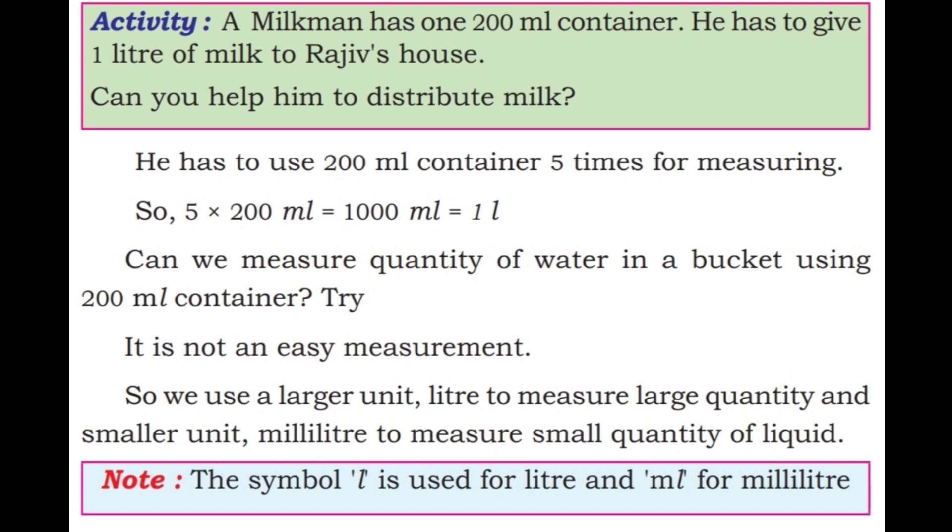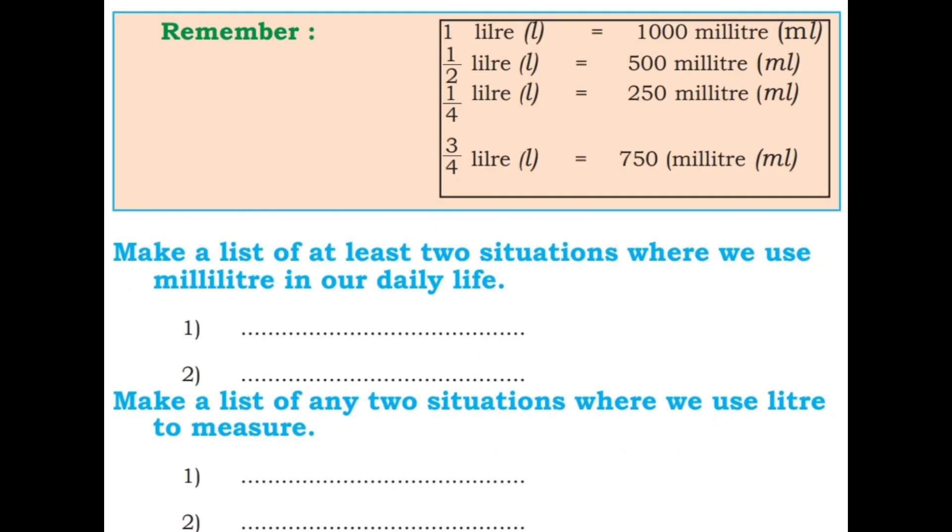Note, the symbol L is used for liter and ML for milliliter. Remember, 1 liter equals 1000 ml. Half liter equals 500 ml. 1/4 liter equals 250 ml. 3/4 liter equals 750 ml.